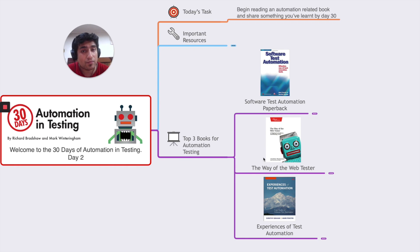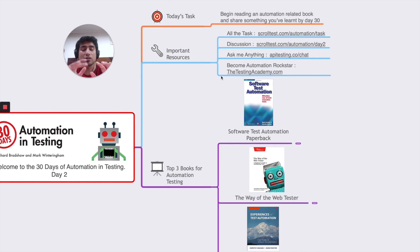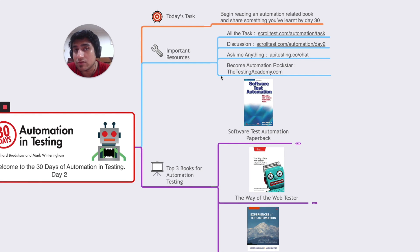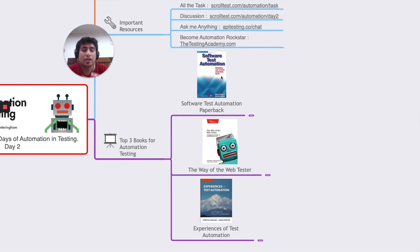All the tasks for this challenge are available at scrolltest.com/automation-task. If you want to discuss this project or these books on the Ministry of Testing, go to Day 2 and ask me anything. You can also reach me at apitesting.co/chat. If you want to learn more about advanced automation and become part of the community, join testingacademy.com. I'll also put links to the books in the description — it's your choice whether to buy through my links.